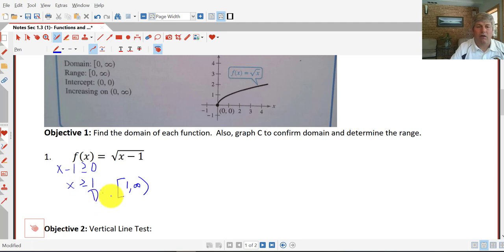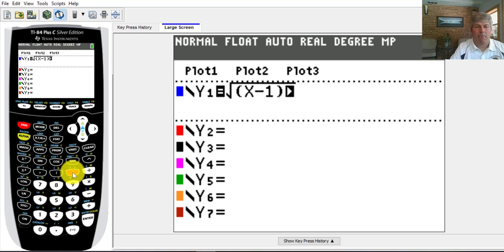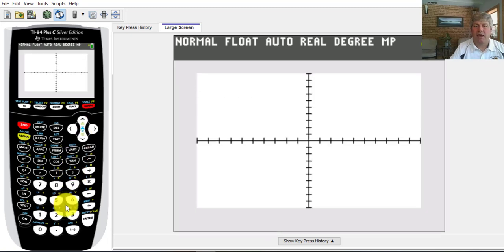That is our domain of our function. Our range, we can see from our library of parent functions what our range is. We can also graph the square root function. So second square root, I'm going to put that in parentheses, although I probably don't need to, x minus one. And we'll go ahead and graph that.